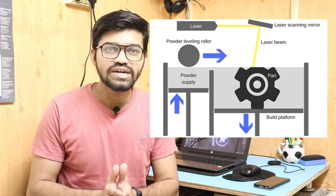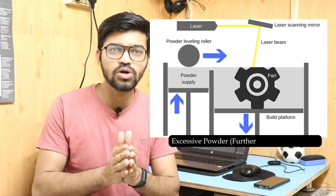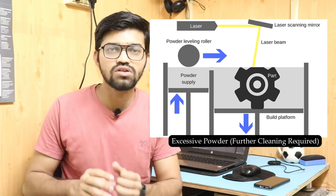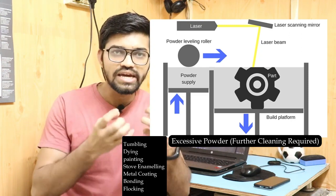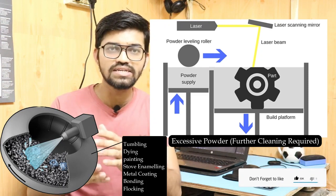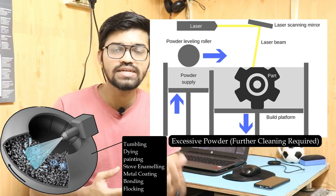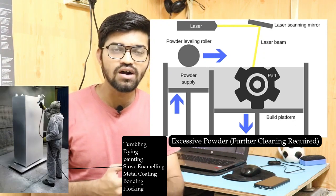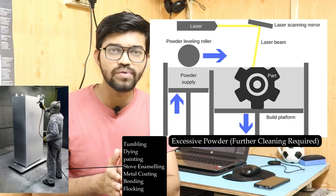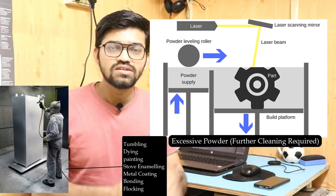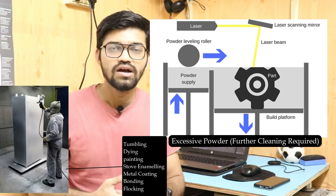Once the required object is formed, it is removed from the second chamber. Excess powder on the part is removed, and then the part is sent for finishing operations. Finishing processes include tumbling — where the part is placed in a vibratory media to remove excess powder — as well as painting, dyeing, and stove enameling, where a smooth coating is applied to the surface. For metal parts, metal coatings, powder coating, and flocking are also options.